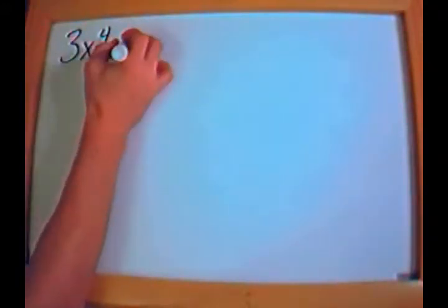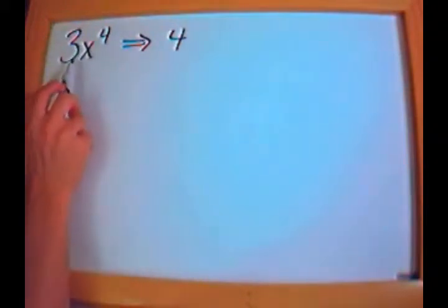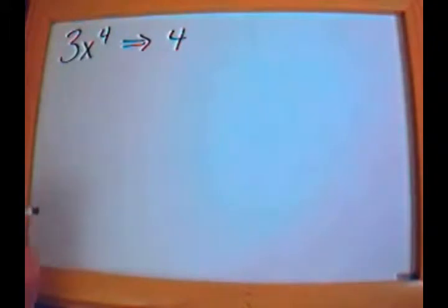Next, let's look at some polynomials and talk about something called the degree. Here's a monomial: 3x to the 4th. You'll be asked on some test what is the degree of this polynomial. The degree is the highest exponent in any of the terms. So in this case the degree is 4. This is a 4th degree polynomial because the highest power of x is 4.